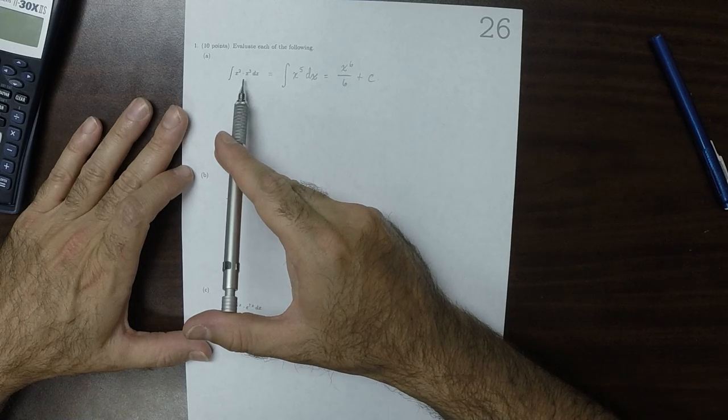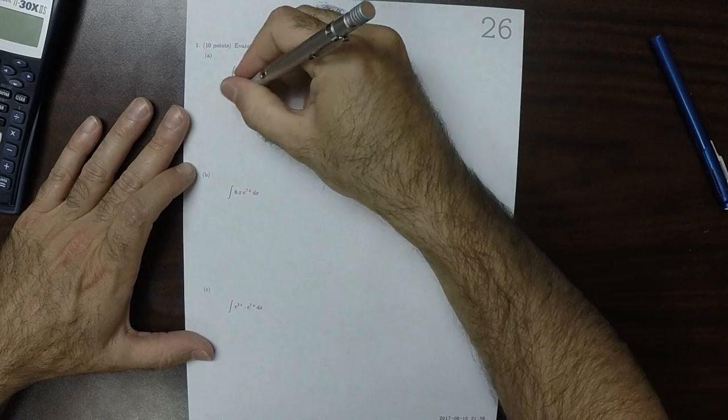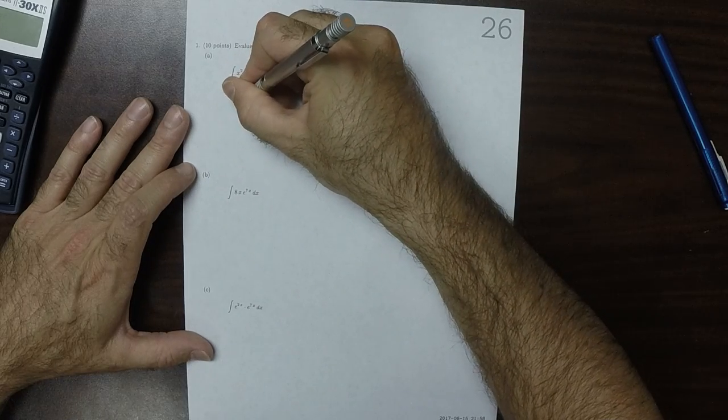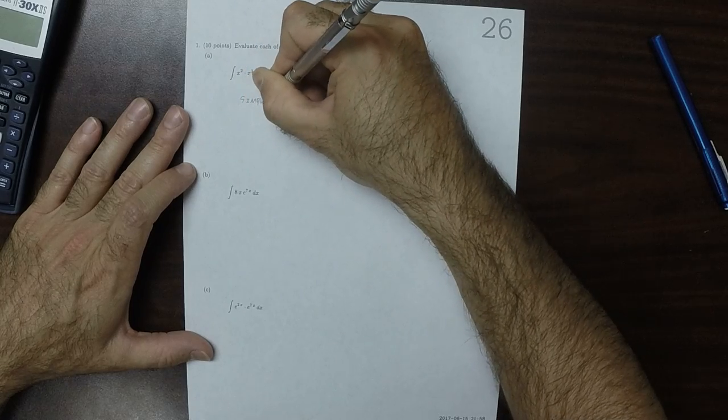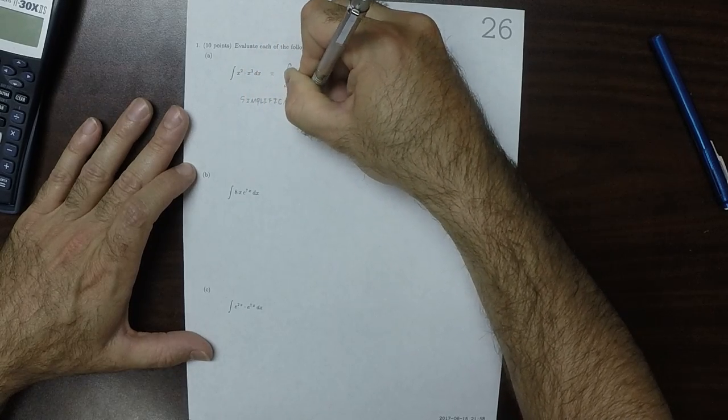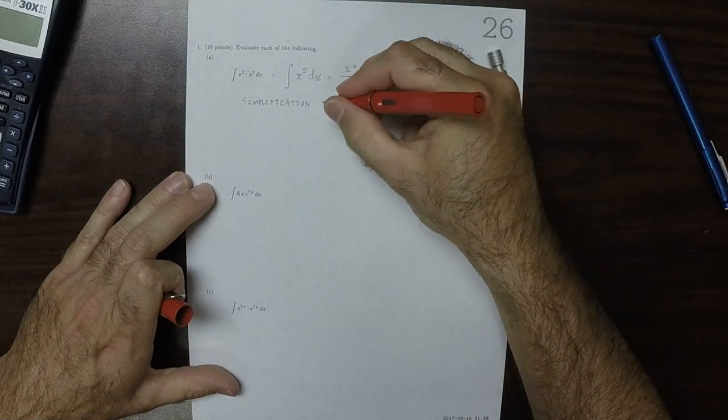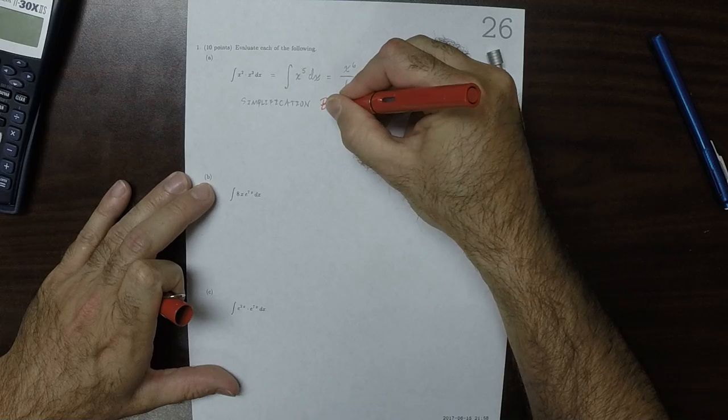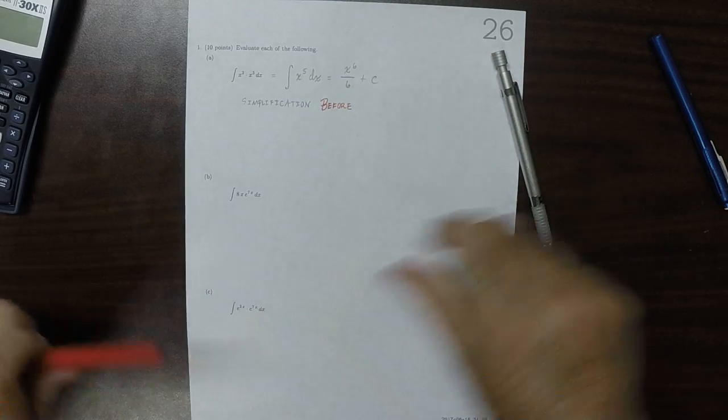And then realize, no, I should simplify it and not attempt by parts. So simplification before using by parts.